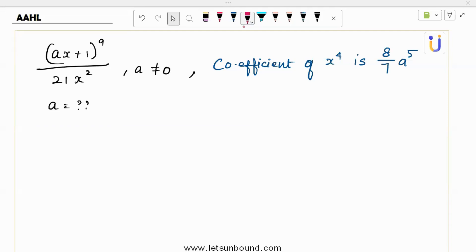So here an expansion, ax plus 1 whole power 9, okay that's binomial, divided by 21x square, and the coefficient of this entire expansion, coefficient of x power 4 of this entire expansion is this. So what is our a? a is not equal 0. Right, let's proceed with that. This 21x square doesn't matter. So we need to expand that ax plus 1 whole power 9.